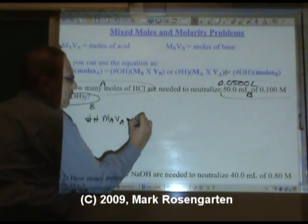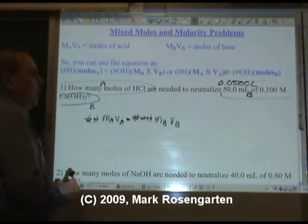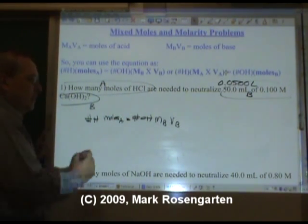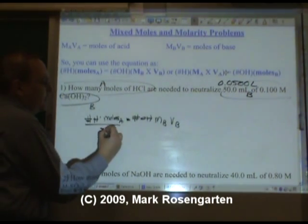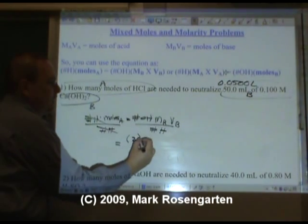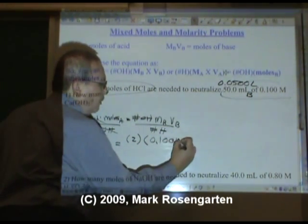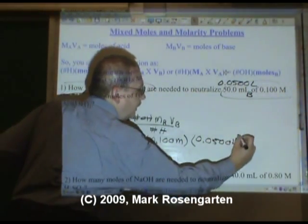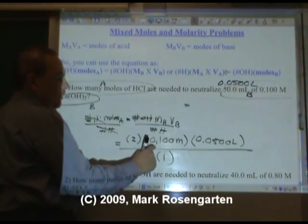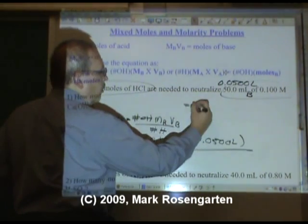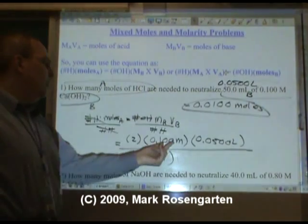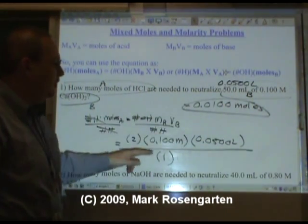Number of H's MAVA equals number of OH's MOBVUB. We're trying to solve for moles of acid. Well, MAVA is the same thing as moles of acid. So we need to solve for that. Divide both sides by number of H. Say goodbye, say goodbye. Moles of acid equals two OH's in the formula of the base. The molarity of the base is 0.100 molar times 0.0500 liters over one hydrogen in the formula of the acid. And this comes out to 0.1 times 0.05 is 0.005 times two is 0.0100 moles. Three sig figs, three sig figs, three sig figs in the final answer. Because remember these aren't measurements, so sig figs don't apply there.